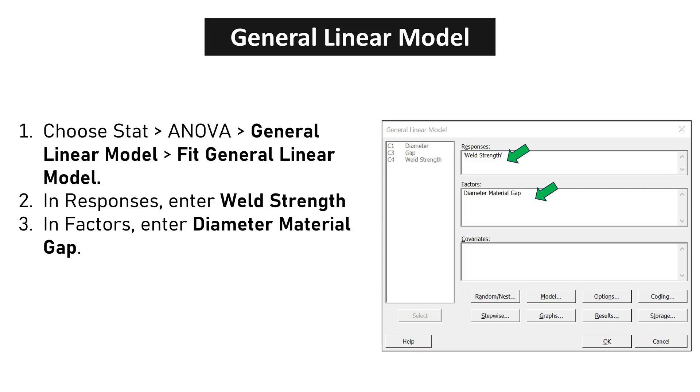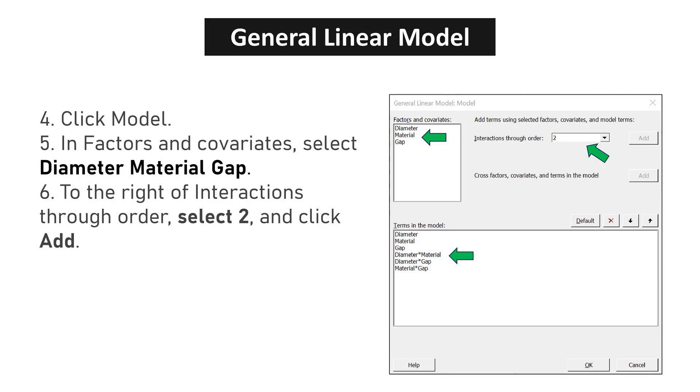In Responses, enter Weld Strength. In Factors, enter Diameter Material Gap. Click Model. In Factors and Covariates, select Diameter Material Gap. To the right of Interactions through Order, select 2 and click Add.